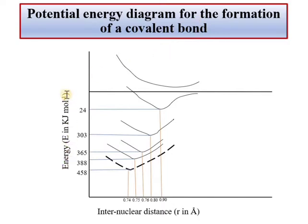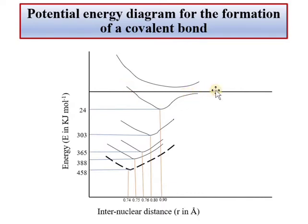This is the potential energy diagram for the formation of a covalent bond — energy versus internuclear distance. Here is the nucleus and here is the distance. When we have two atoms at infinity, as they approach, the energy reaches a minimum value. Then, if we bring them even closer, repulsion starts and the energy increases.